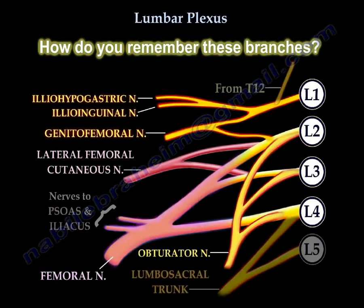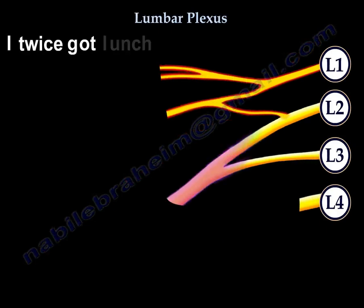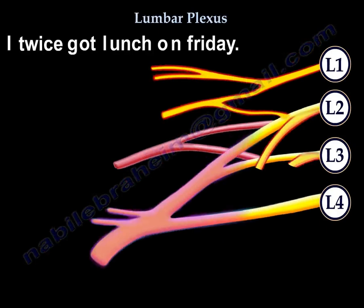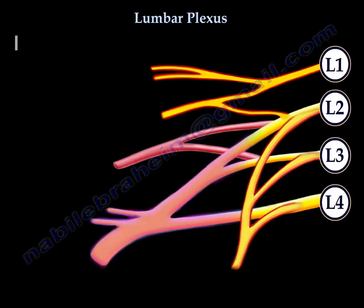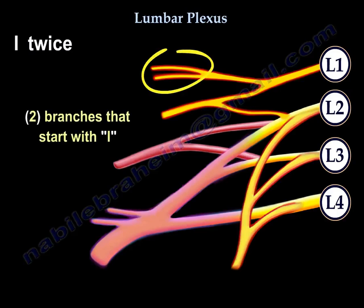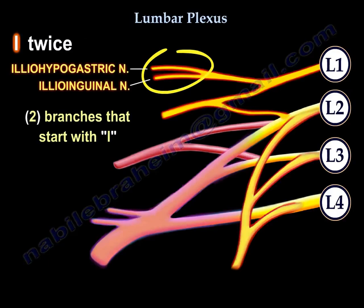To remember the branches, use the mnemonic: 'I twice got lunch on Friday.' 'I twice' means we have two I's — the iliohypogastric and the ilioinguinal. The iliohypogastric is proximal and the ilioinguinal is lower, so the iliohypogastric nerve comes before the ilioinguinal.